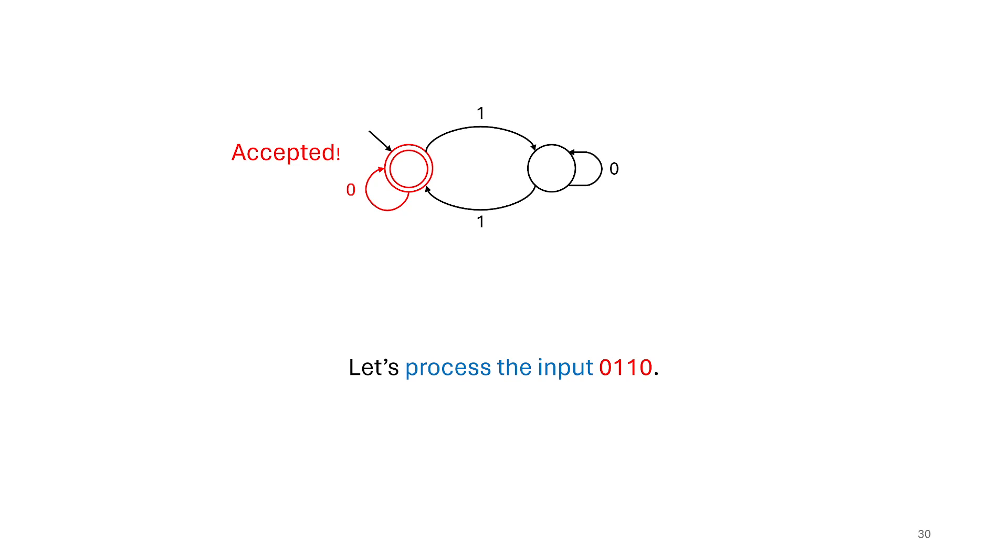So whatever language this machine is designed to accept or recognize, this string is part of that language and we should accept it or it does accept it. So we might ask ourselves, what is the language that is accepted by this machine? So what are we even asking when we ask that question? We are asking what is the set of strings that is accepted? Which strings are accepted and which ones are not.